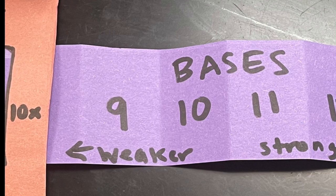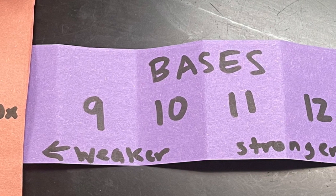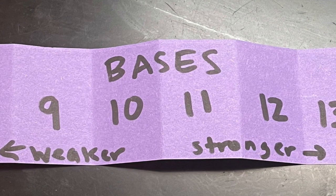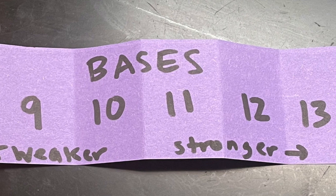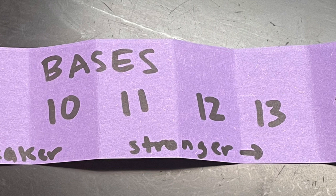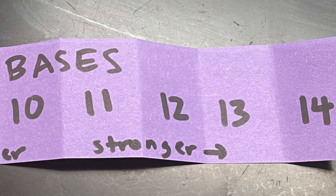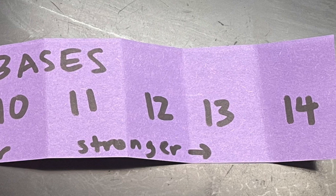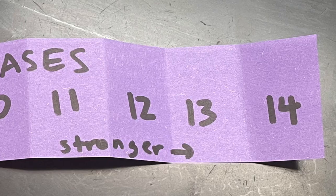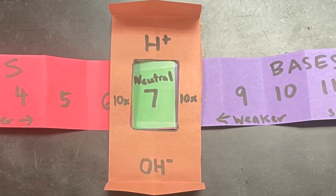Now on the bases side of your model write the word weaker with an arrow facing left because that's approaching seven and the word stronger facing right. So for bases it's a similar concept but when we're approaching 14 that's got the highest concentration of hydroxide ions relative to hydrogen ions. So you have more hydroxide ions as you go to the right which makes a stronger base as you go closer to neutral you have less hydroxide ions. And again once you reach neutral you have an even amount of both the hydrogen and the hydroxide ion.